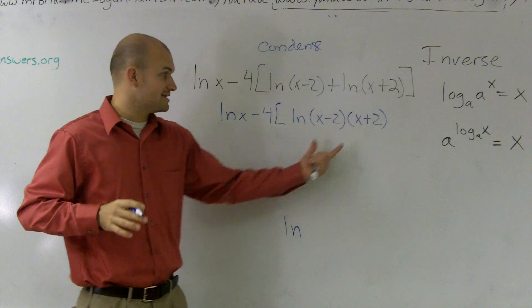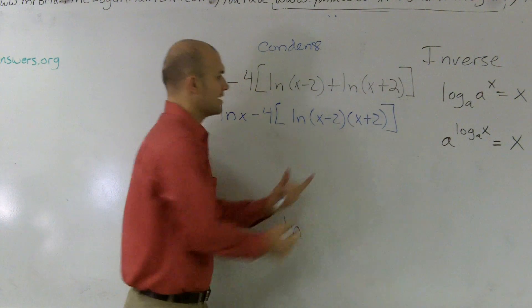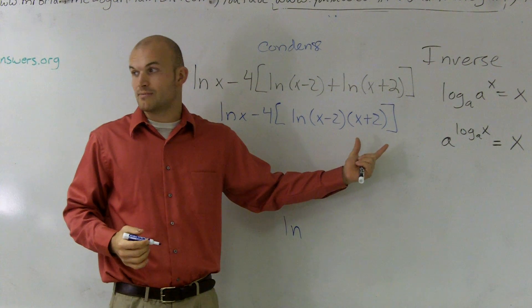I also notice that this is a difference of two squares. So I can rewrite this as x squared minus 4.